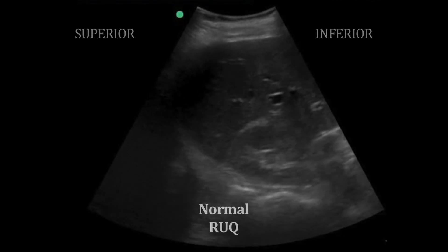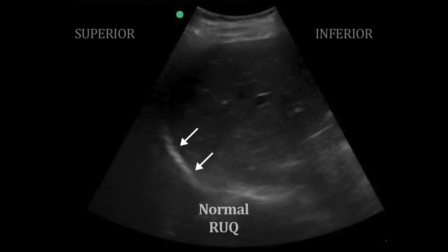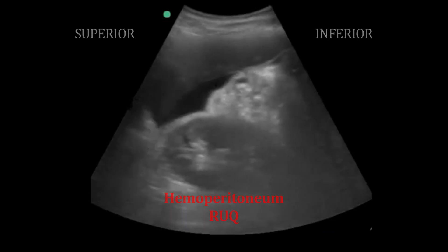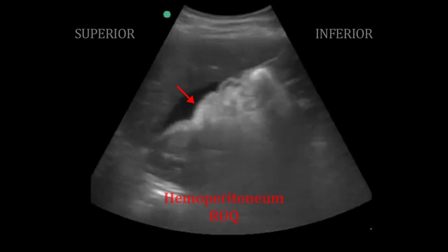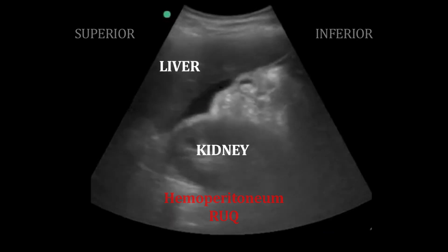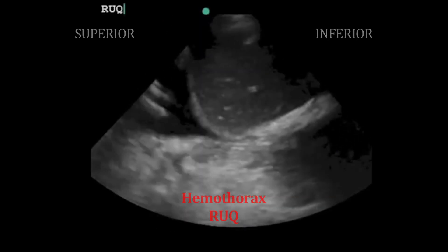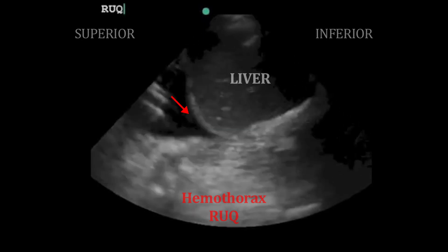Once the kidney is in view, look for where the liver and kidney meet — this is our hepatorenal recess. Note that the diaphragm is also in view. Here is an abnormal scan of the right upper quadrant where we see fluid, which is black or anechoic on ultrasound, between the liver and kidney. Here's another with fluid above the diaphragm, likely representing a hemothorax.